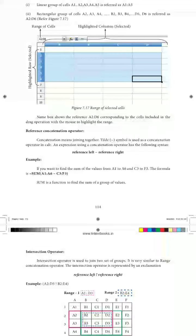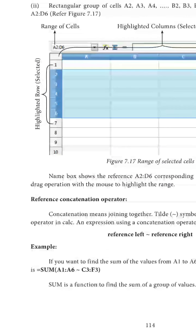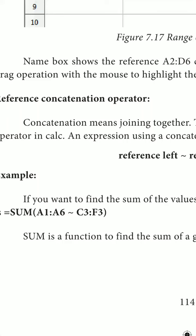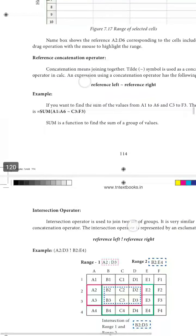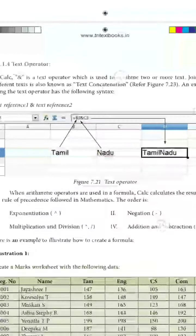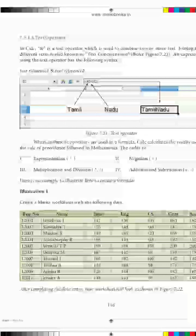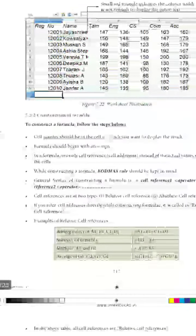Examples of the intersection operator, reference concatenation operator, and range selection — such as A1 to A6 or C3 to F3 — are shown here. The left and right references can be the index of a particular cell. Text operators allow concatenation of two text strings, meaning adding two texts together. Exponential and other operations can also be done using text operators.